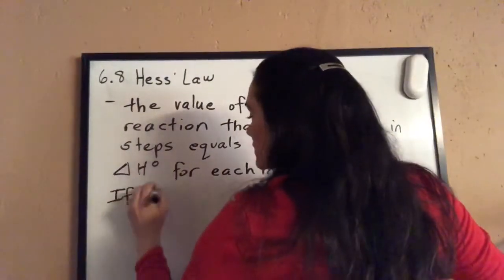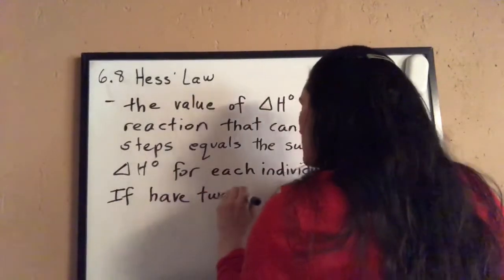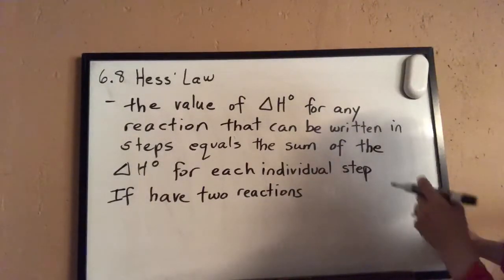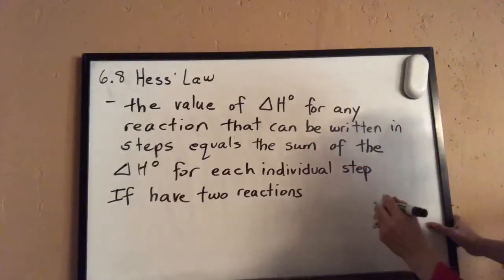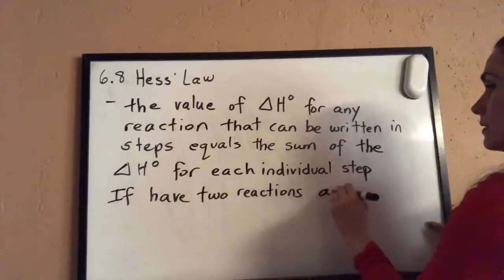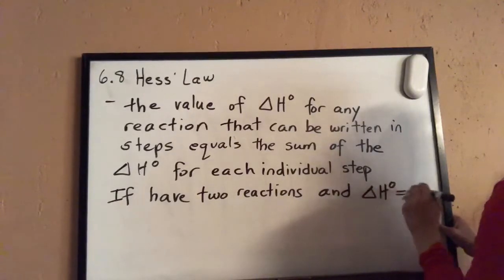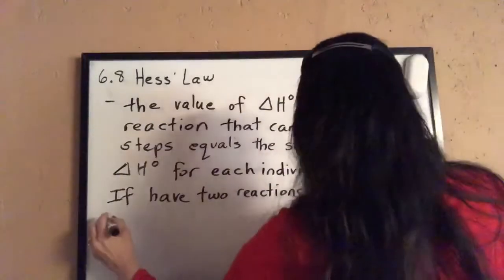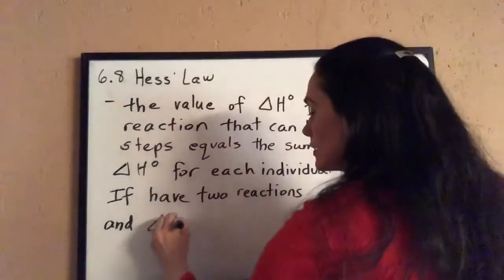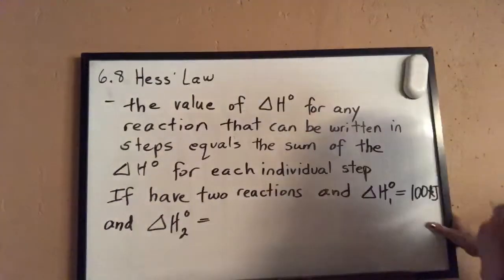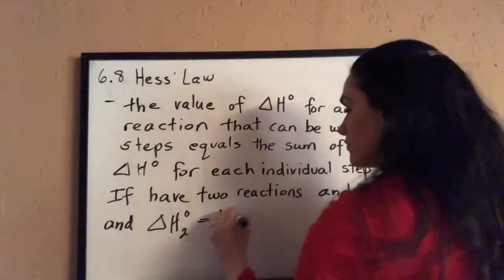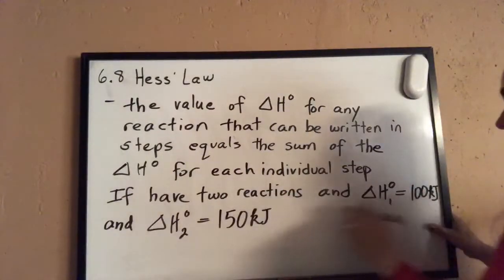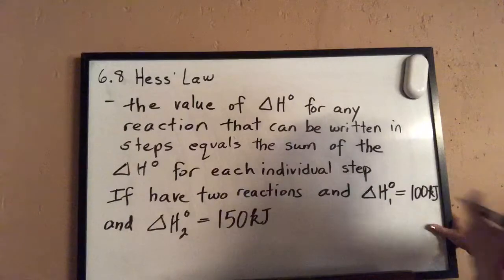If you have two reactions and both are endothermic — say one has a value of 100 kilojoules and the second endothermic reaction has 150 kilojoules — the overall heat would be the sum of these two, assuming the reactions sum together.